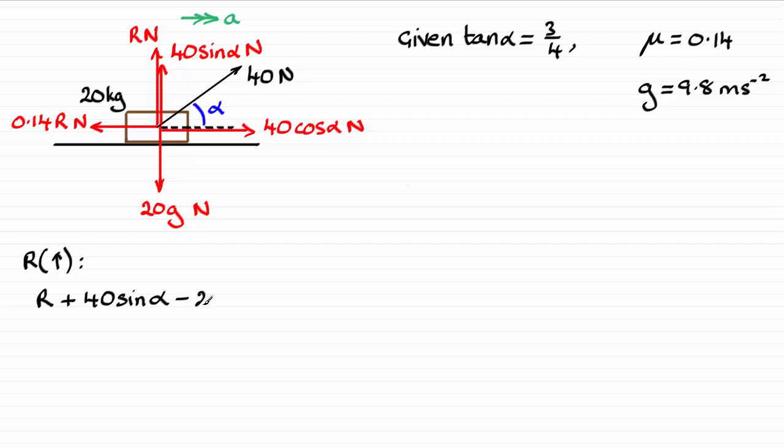Then we've got the weight acting downwards, that's in the negative sense, that's minus 20g. These two forces here, they're perpendicular to this direction, so they're going to have no effect at all in this equation. So this is the resultant force acting on the particle in the vertical sense, and that is going to be equal to zero because the particle is in equilibrium in this vertical sense—it's only going to slide across to the right.